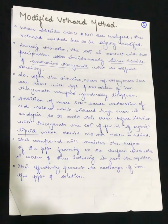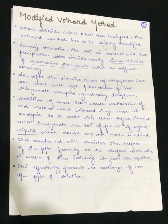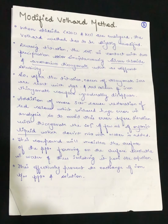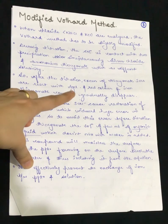This leads us to the modified Volhard's method. When chlorides such as NaCl and KCl are analyzed, the Volhard's method needs to be slightly modified. During titration, the solution is in contact simultaneously with two precipitates — silver chloride and ammonium thiocyanate — which have different solubilities. This is the key issue that requires modification.